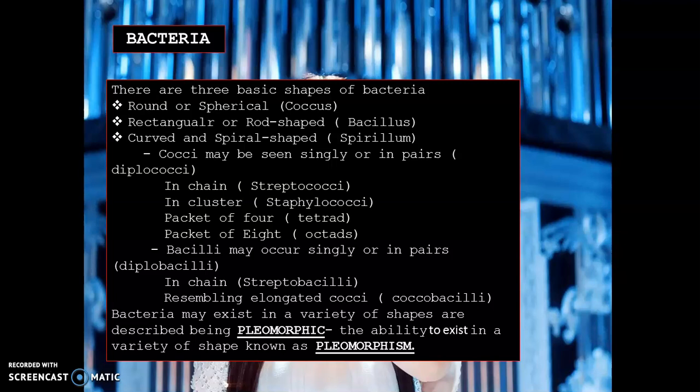If a coccus is single it is called coccus; in pairs, diplococci; in a chain, streptococci; in a cluster, staphylococci; as a tetrad; and in packets of eight, octets. If bacillus is in single form it is called bacillus; in pairs, diplobacilli; in a chain, streptobacilli. A combination of coccus and bacillus is called coccobacilli. Bacteria can also exist in many varieties of shapes.